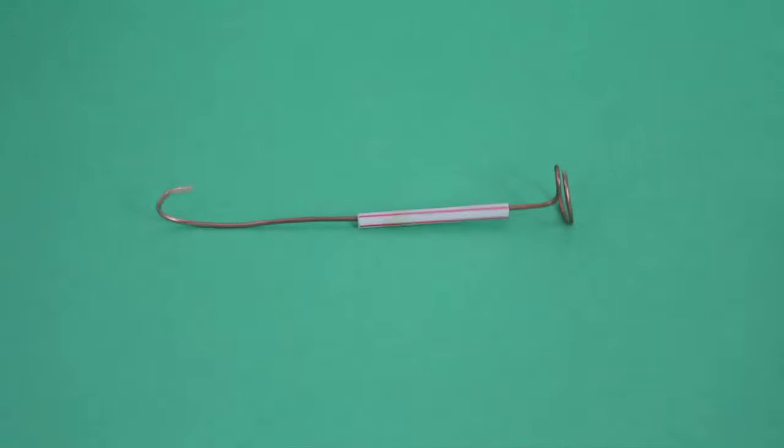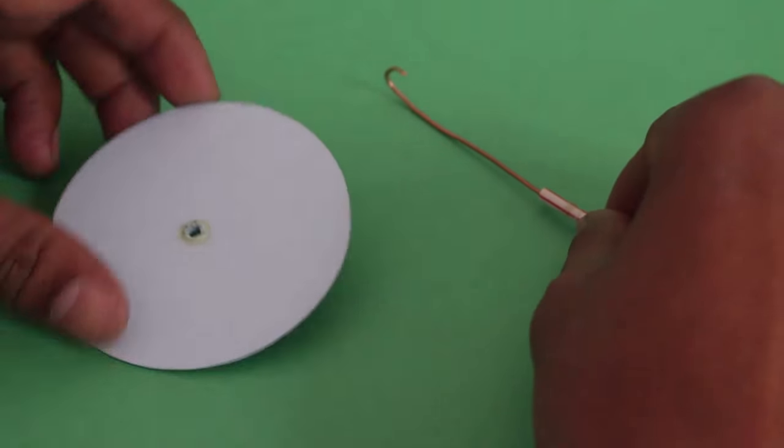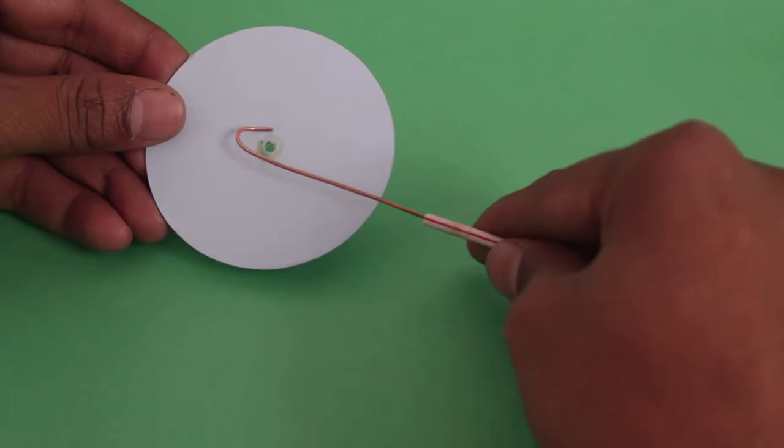Fold the other end of the wire into a hook. Weave the hook through the central hole of a thick cardboard circle.